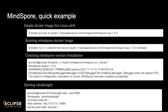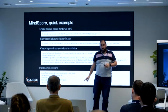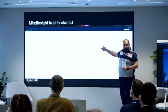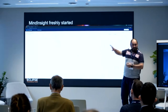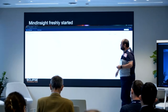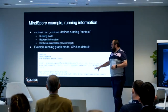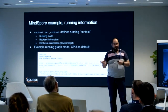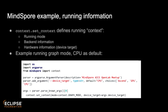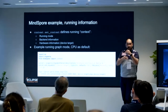To start MindInsight inside the Docker image, run MindInsight start with a port number and it's done. This shows MindInsight freshly started with nothing yet run — just the dashboard. The first thing you do in MindSpore is define your running context: the running mode (pipeline streaming or not), backend information, dataset type, and most importantly, hardware information. You can see I'm running on CPU by default in graph mode.